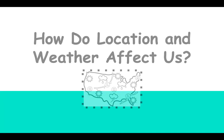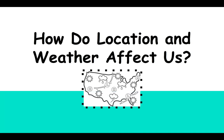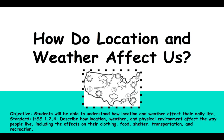Hi friends, so for today's social studies lesson we will be talking about how location and weather affect us. The objective for today's lesson is: students will be able to understand how location and weather affect their daily life.